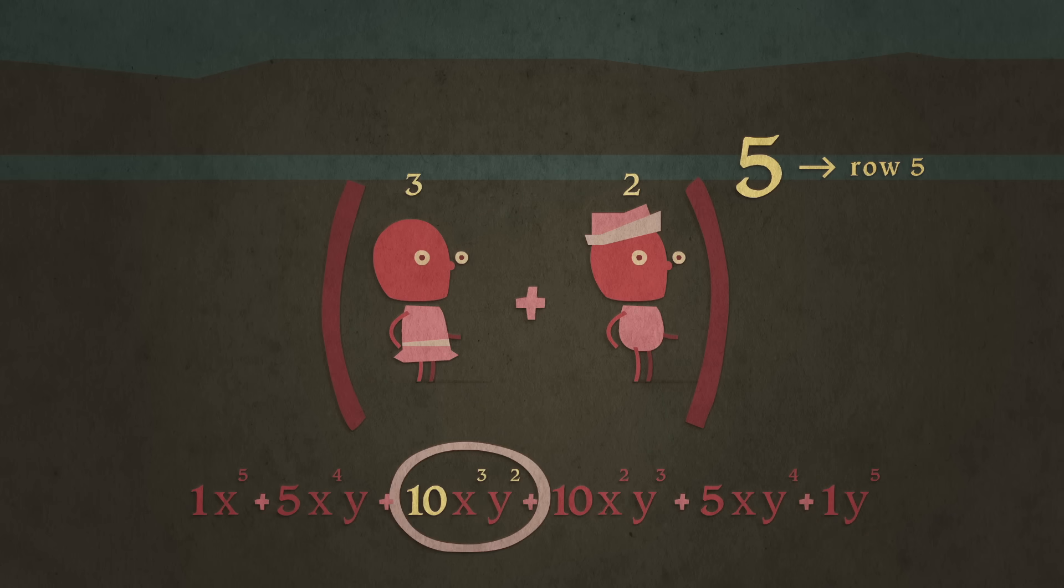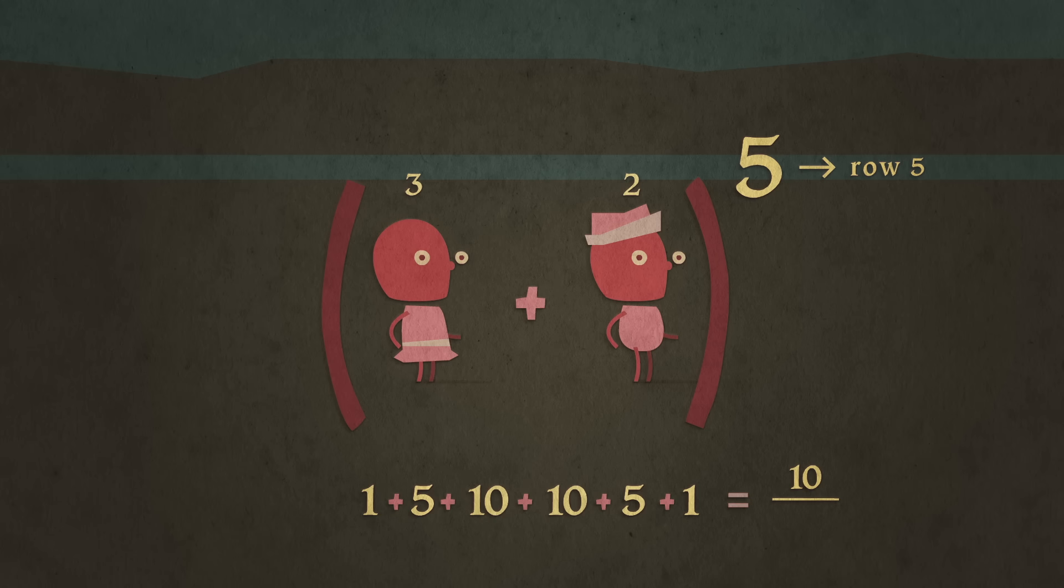The third number is what we're looking for: 10 out of the sum of all the possibilities in the row. So 10 over 32, or 31.25%.